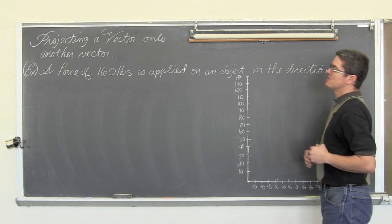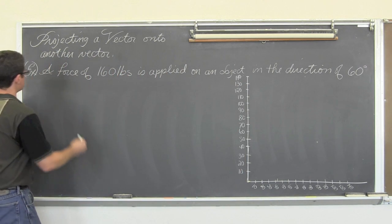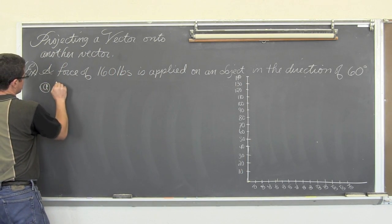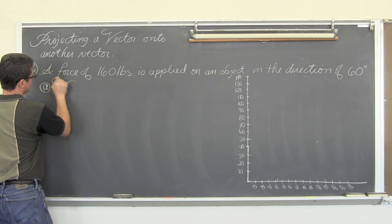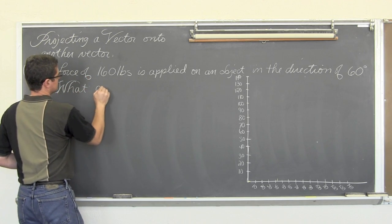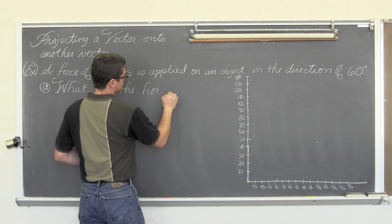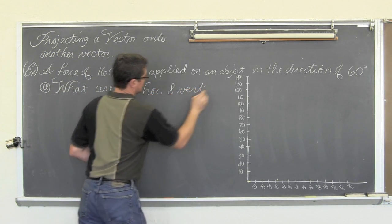So we have a force of 160 pounds and it is applied on an object in the direction of 60 degrees. So part A of this is going to be what are the horizontal and vertical components.